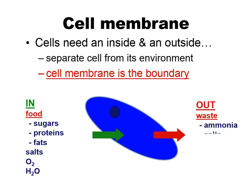Waste products can be things like ammonia, certain salts, carbon dioxide, and water, and products. Cells make proteins for export to other cells or to other environments, so you need to be able to get those out. The cell membrane's job is to maintain a stable internal environment but also to transport materials in and out.